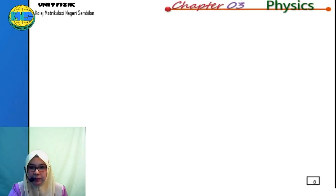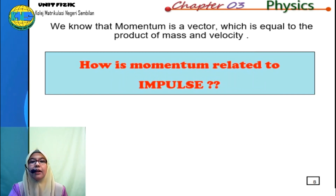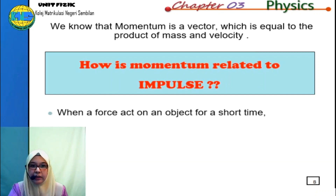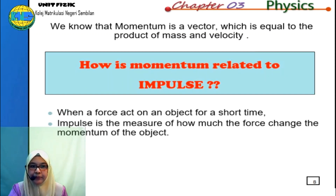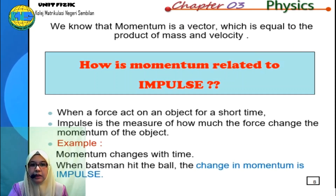Now let's learn subtopic 3.1.2, impulse. We know that momentum is a vector equal to the product of mass and velocity. But how is momentum related to impulse? When a force acts on an object for a short time, impulse is the measure of how much the force changes the momentum of the object. For example, when a batsman hits a ball, the change in momentum is the impulse.